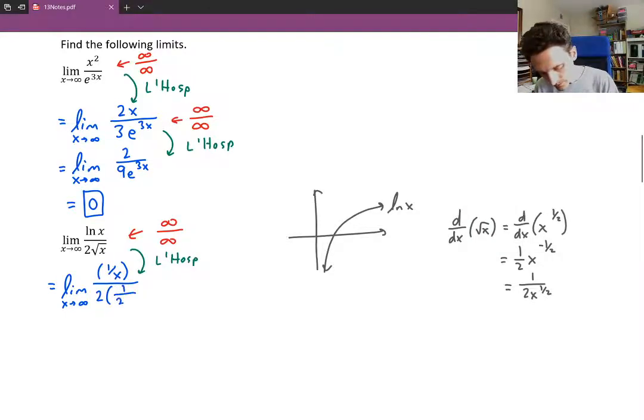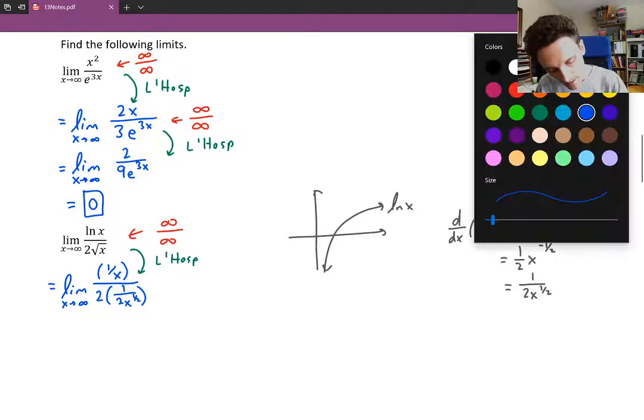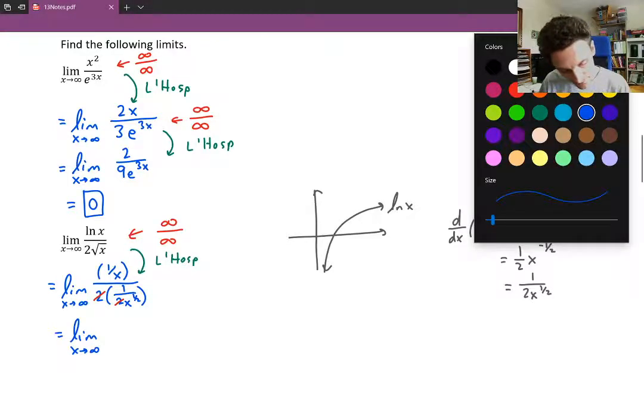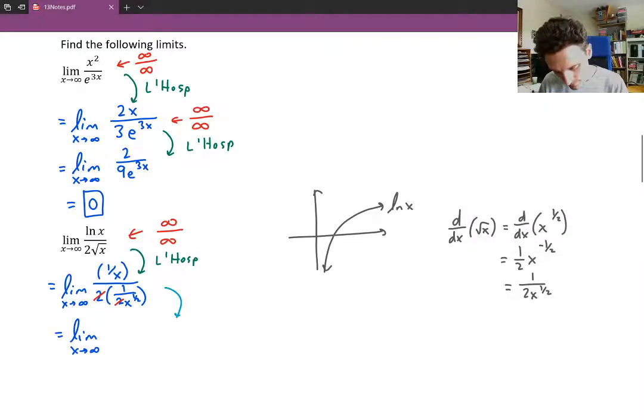So this is 1 over 2 x to the half. You could write it as 1 over 2 square root of x but it's okay. We're going to be simplifying this in just a moment and we'll want to have those rational exponents. Now the 2's are going to cancel and then we can write this as the limit as x approaches infinity of well 1 over x divided by 1 over x to the half is going to be the same thing as 1 over x times the reciprocal of 1 over x to the half which is x to the half over x. And if you think about that you can divide these two. x to the half divided by x will be x to the 1 half minus 1 which is x to the negative 1 half.